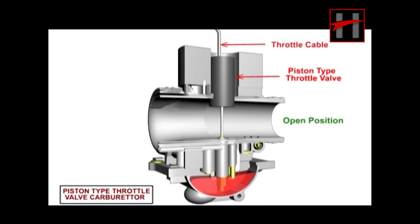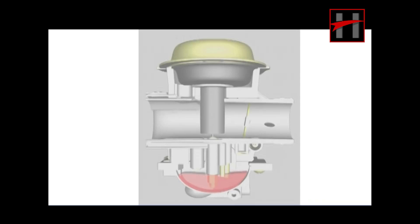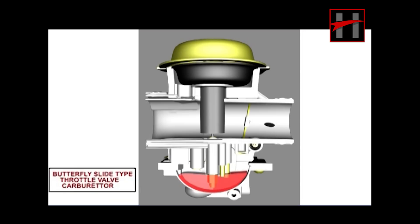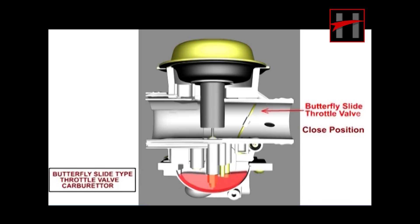What you see on screen is a butterfly type throttle valve carburetor. In this type of carburetor, both butterfly valve and piston valve are incorporated. The butterfly slide valve is located after the piston valve and is controlled by the throttle cable.